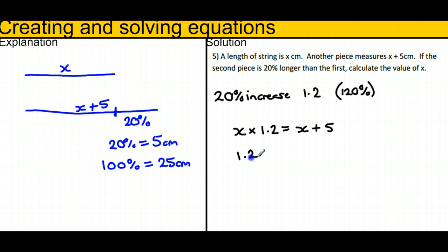So I've got 1.2x equals x plus 5. If I subtract x from both sides, just like I would for a normal equation.